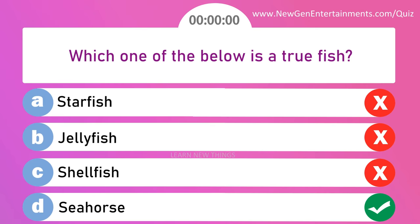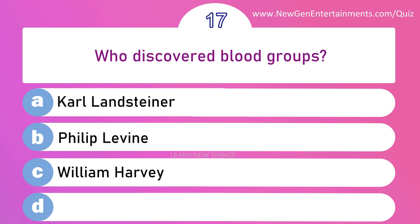Who discovered blood groups? Options are: A) Karl Landsteiner, B) Philip Levine, C) William Harvey, and D) Robert Koch. Answer is option A: Karl Landsteiner.